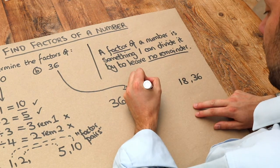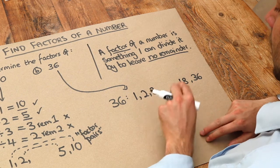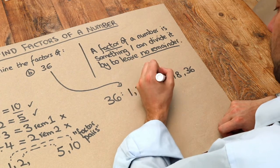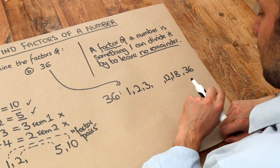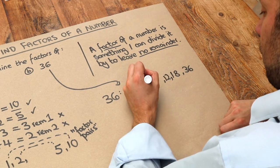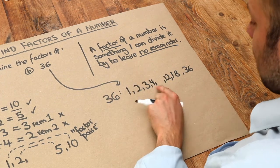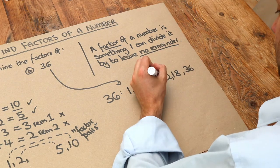What about 3? Can we divide 36 by 3 to leave no remainder? Yes. 3 times what is 36? It's 3 times 12. I accidentally didn't leave enough space, but let's try the next one. Can you divide 36 by 4? Yes, you can. 4 goes into 36 nine times, so it's 4 times 9.